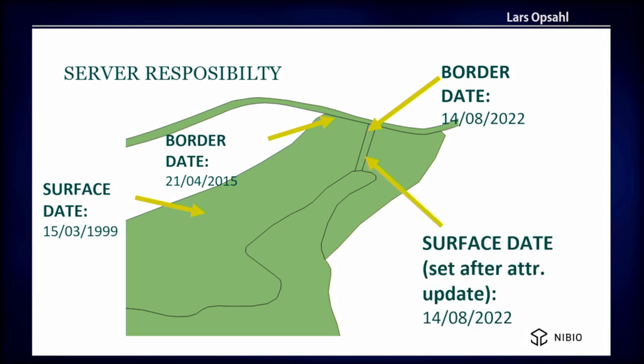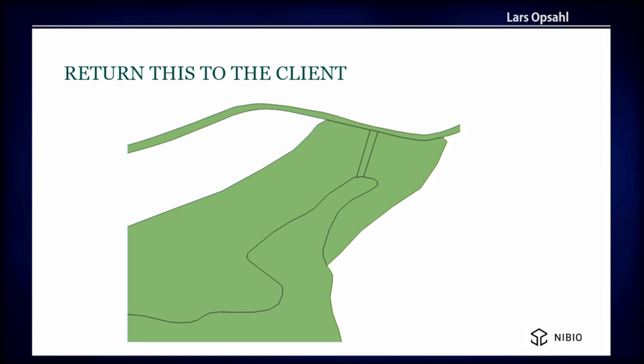What do we return to the client? The client selects the road, changes the attribute on that road — one single attribute — and sends the road back. This way we secure database consistency. And we're actually done. This follows pretty much what Codd said in 1970.